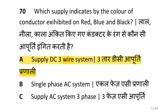Dear friends, we are going to see control panel wiring, which supply indicates by the color of conductor exhibited on red, blue and black, i.e. supply DC-3 wire system.